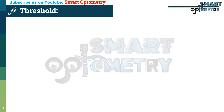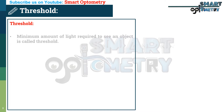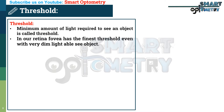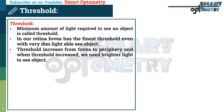Another important concept before further discussion about perimetry is threshold. The threshold is the minimum amount of light required to see an object. Below this level of light, the object can't be seen — it will be invisible. In our retina, the fovea has the finest threshold, able to see objects even with very dim light. Threshold increases from the fovea to the periphery, and when threshold increases, we need brighter light to see an object.